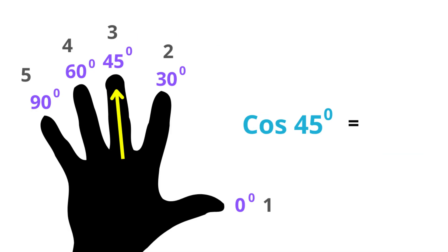Next cosine of 45 degrees. There are only 2 fingers to this side. Take the square root and divide it by 2. Pretty cool huh?